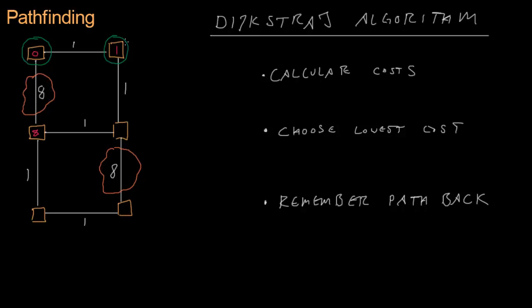Now that we've chosen the lowest cost, we remove the previous node from consideration — we won't visit it again. Let's not forget to remember the path back, just like we did in our breadth-first search. Back to step 1: calculate the costs of every neighbor of our current node. One neighbor is already visited so we ignore it. The other costs 1 plus 1 equals 2.